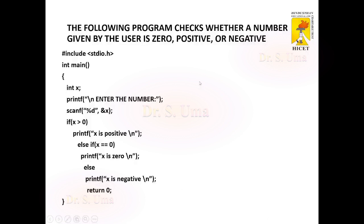This is a sample program to check if the given number is zero, positive, or negative. We get the input value with the scanf statement and we are checking if it is greater than 0. If it is greater than 0, we are displaying 'x is positive'. If it is equal to 0, it is displayed as 0. If otherwise, if it is not positive or 0, it is considered to be negative.